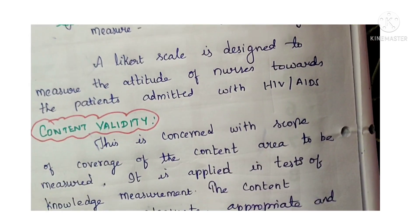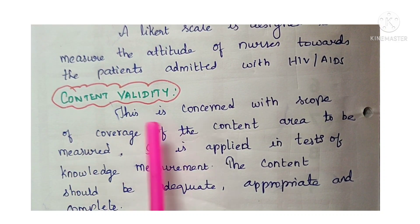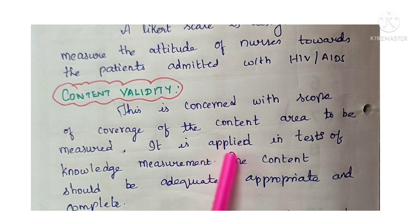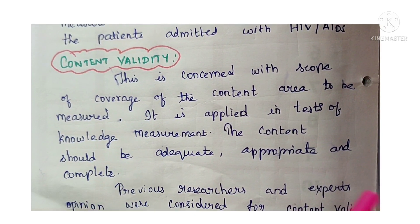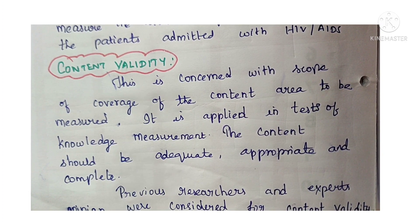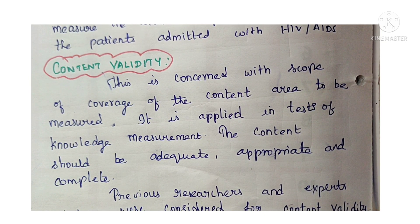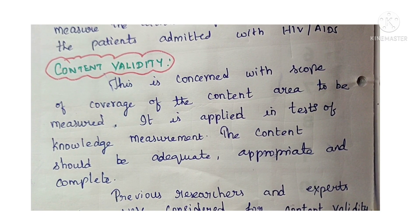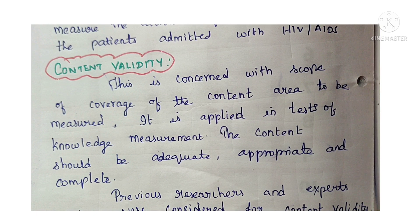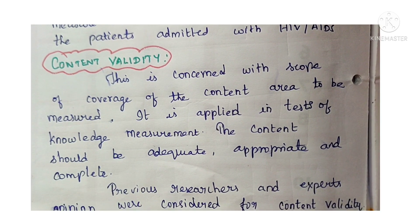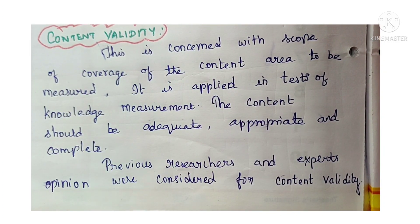Next is content validity. Content validity is concerned with the scope of coverage of the content area to be measured. It is applied in tests of knowledge measurement. The content should be adequate, appropriate, and complete. Previous researchers and experts' opinions are considered for content validity. When doing research, you will be asked to go for content validity — show your data collection tool to subject experts and get their opinion.